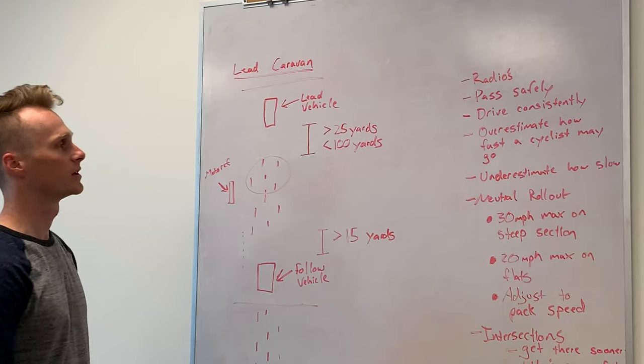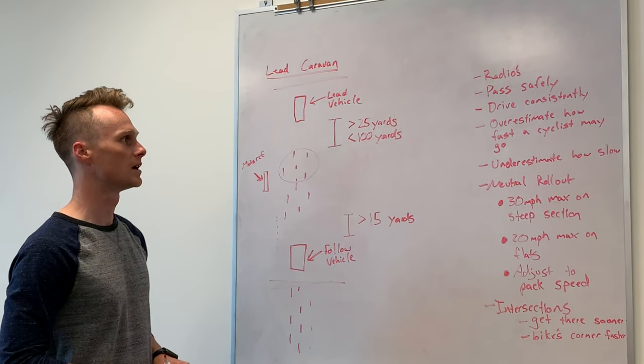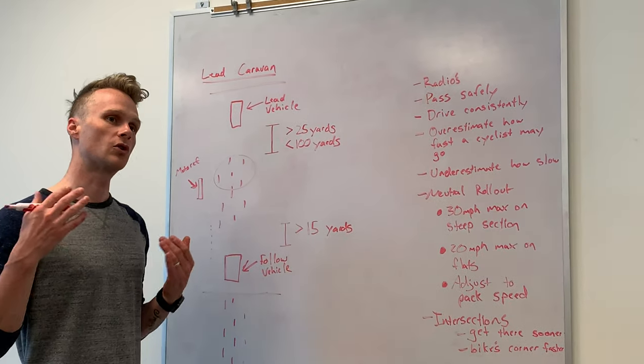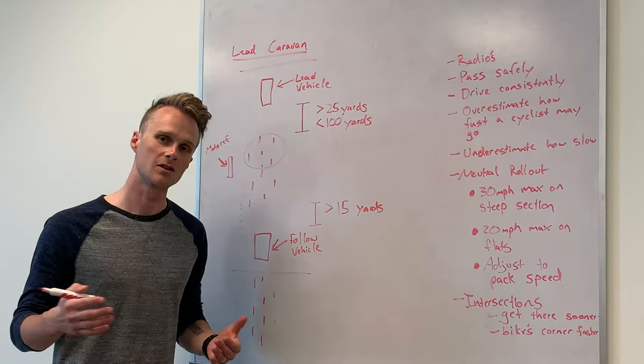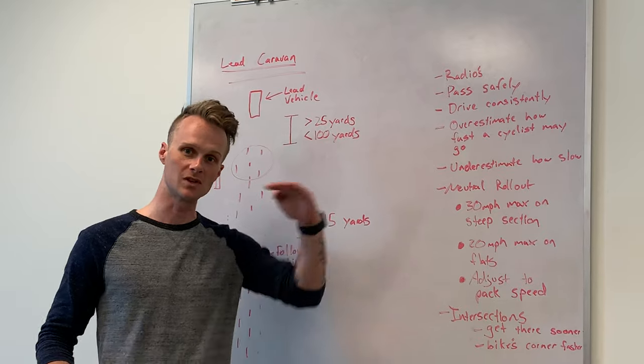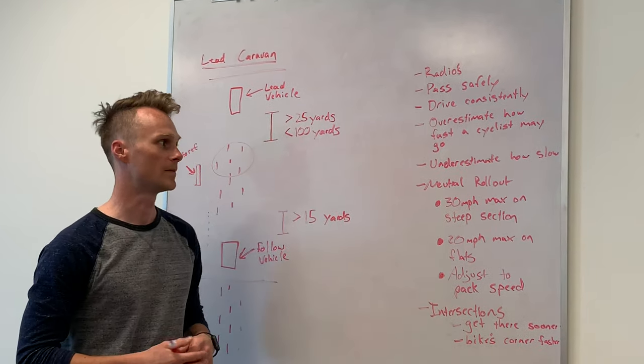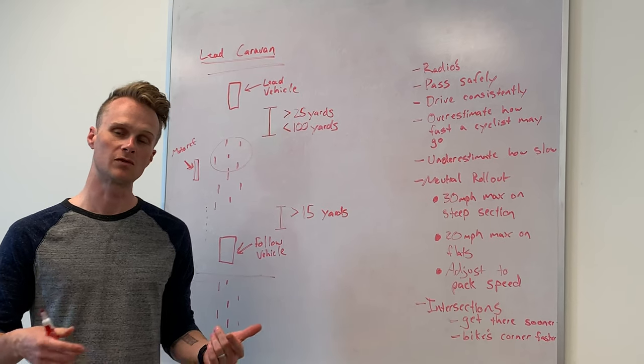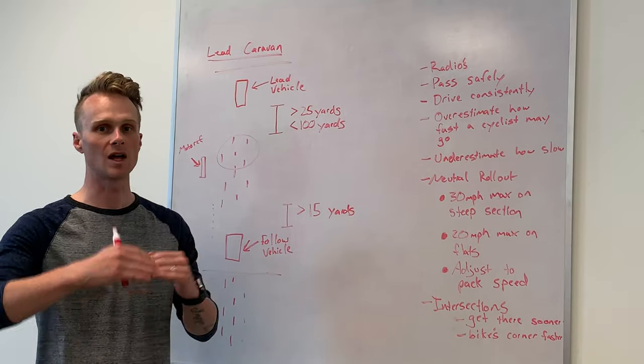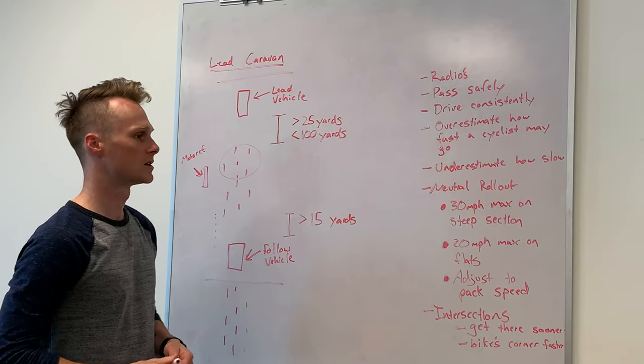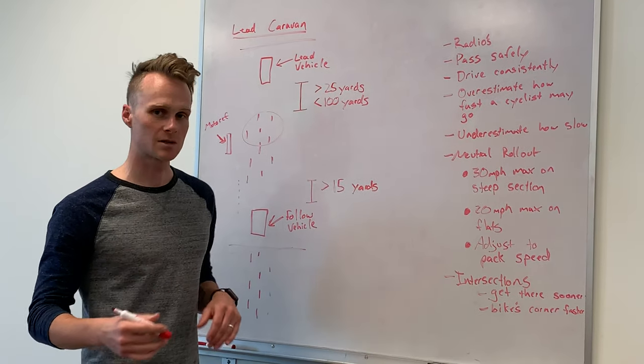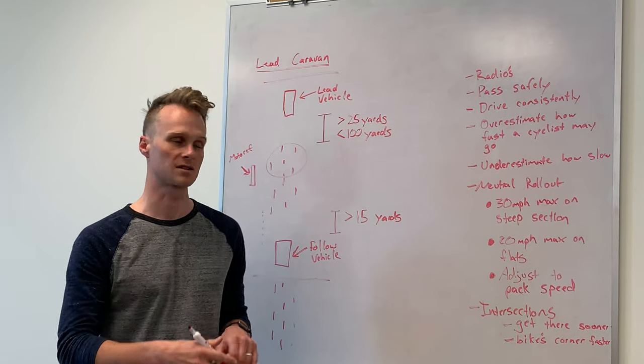Drive consistently. Pass safely. Communicate, communicate, communicate as much as you can. And something that I would say to you is you should overestimate the speed, how fast a cyclist can go. If you think a cyclist is going to be coming up behind you this fast, assume that they're actually going this fast. And then vice versa, if you think a cyclist is going slow, underestimate how slow they're going. Cycling is just a lot more on the extremes. So we're going to talk about the neutral rollout here in a second. But always underestimate how slow a cyclist is going and overestimate how fast a cyclist is going.